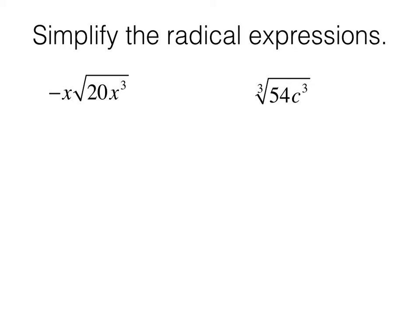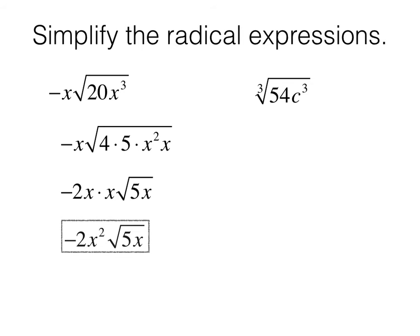More practice simplifying radical expressions. Let's rewrite 20 as 4 times 5. And let's rewrite x cubed as x squared times x. Now let's take the square root of 4 and the square root of x squared out of the radicals, square root of 4 being 2, square root of x squared is x. Multiply that by what's already there, the negative x. And now just simplify your answer to negative 2x squared, square root of 5x.